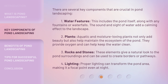Second, Plants. Aquatic and moisture-loving plants not only add beauty but also help maintain the ecosystem of the pond. They provide oxygen and can help keep the water clean. Third, Rocks and stones. These elements give a natural look to the pond's surroundings and can be used to create borders or pathways. Fourth, Lighting. Proper lighting can transform the pond area, making it a focal point even at night.